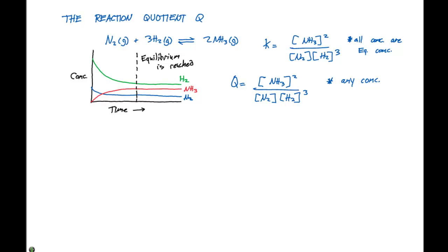So for our K expression, we use equilibrium concentrations. For Q, we can use any concentration along any point in this particular graph. And what we can say is that K is a specific value of Q at equilibrium.